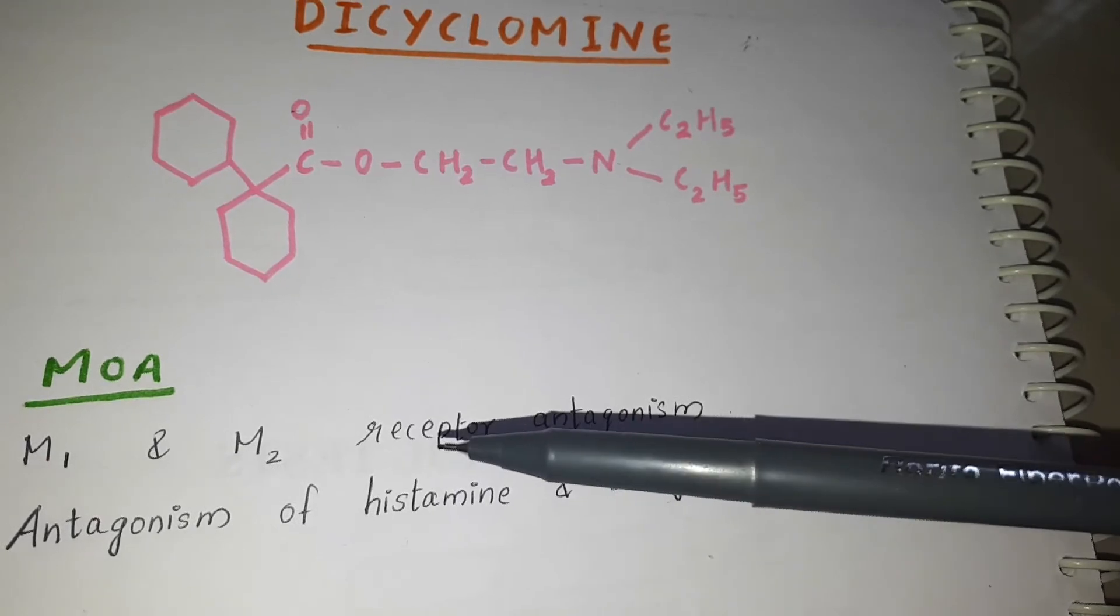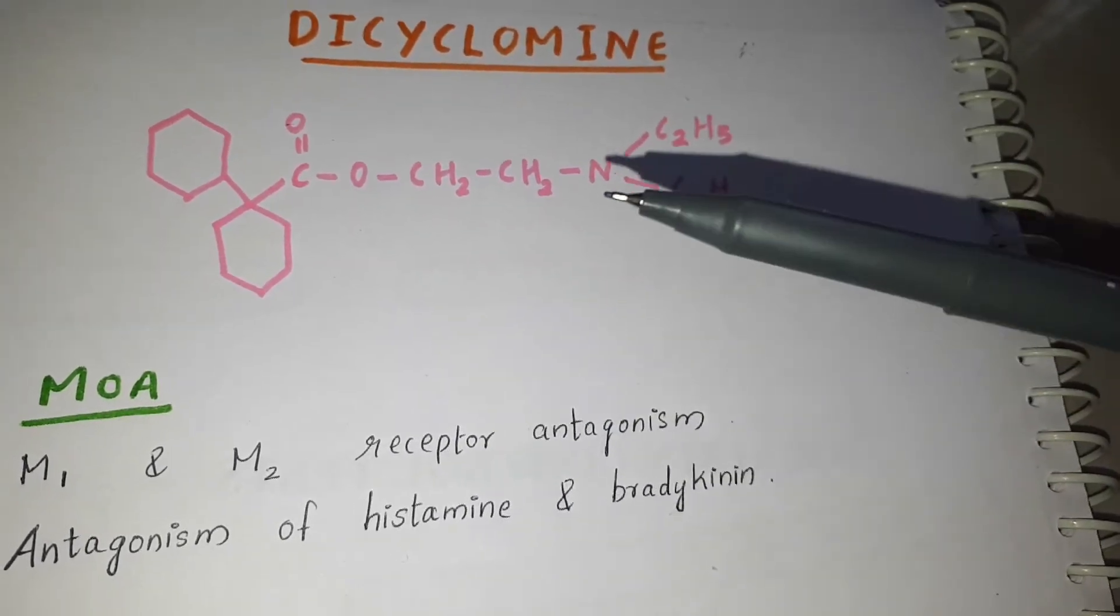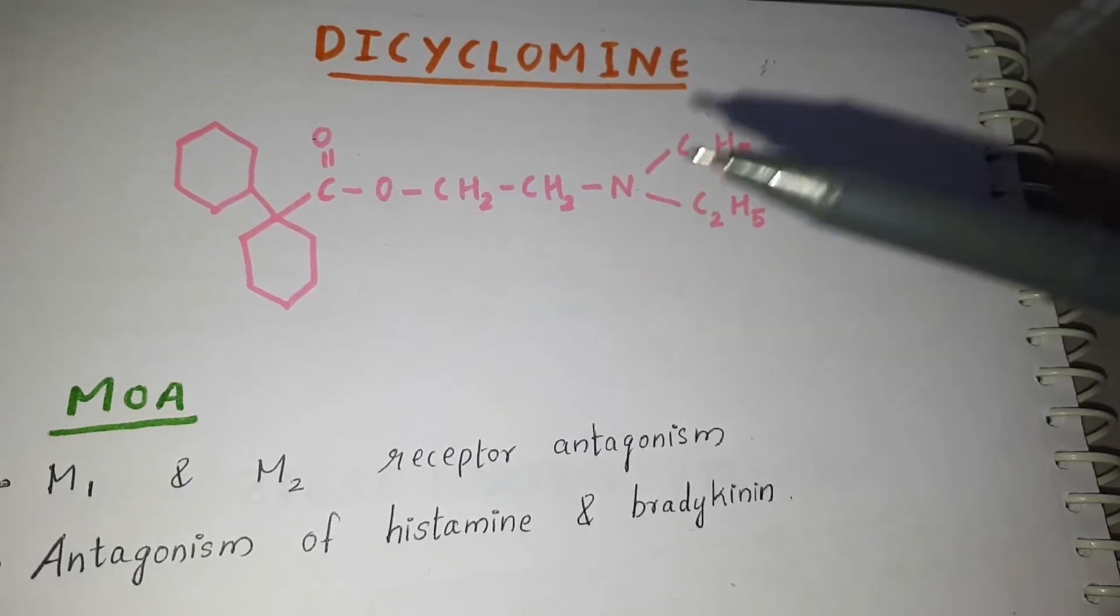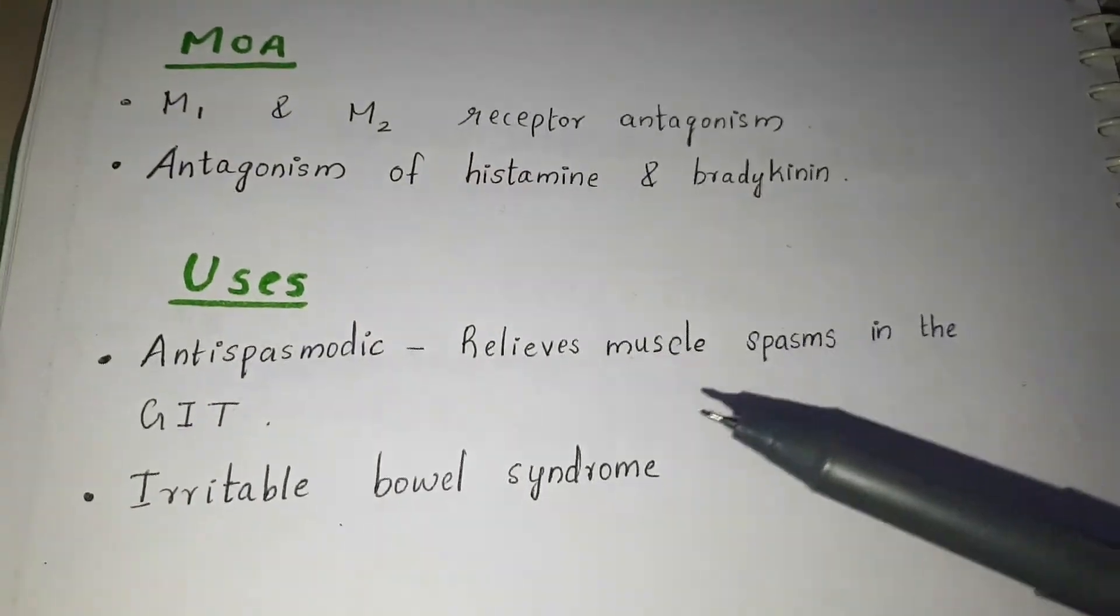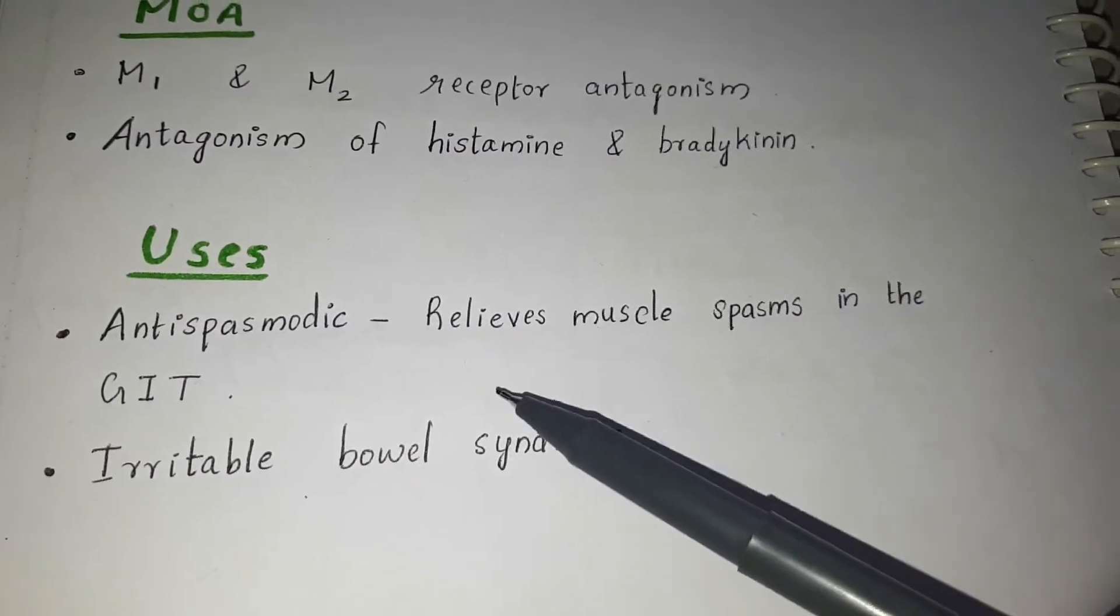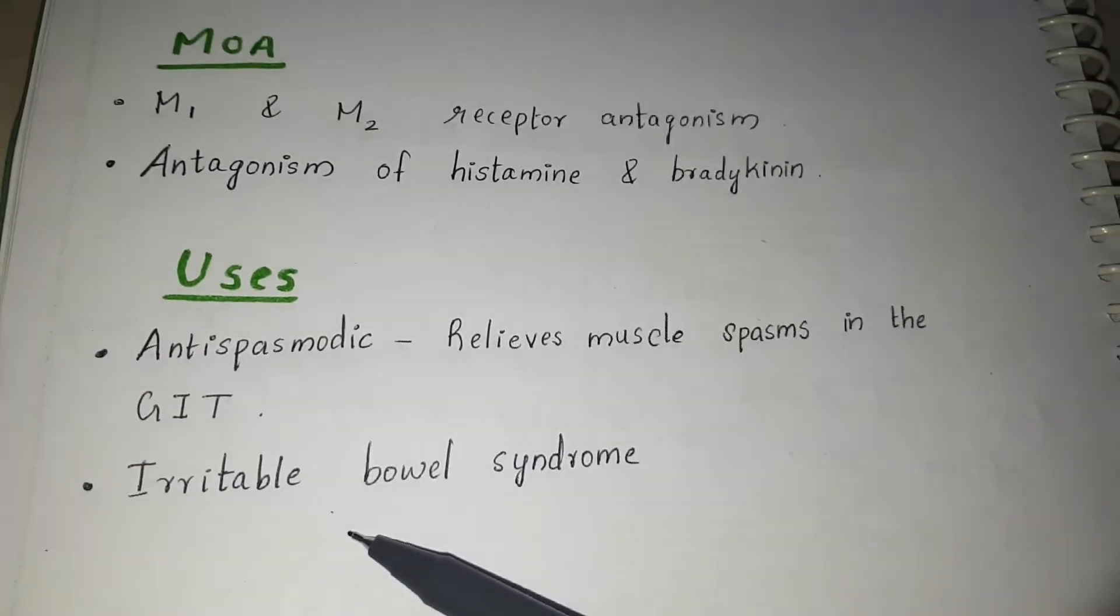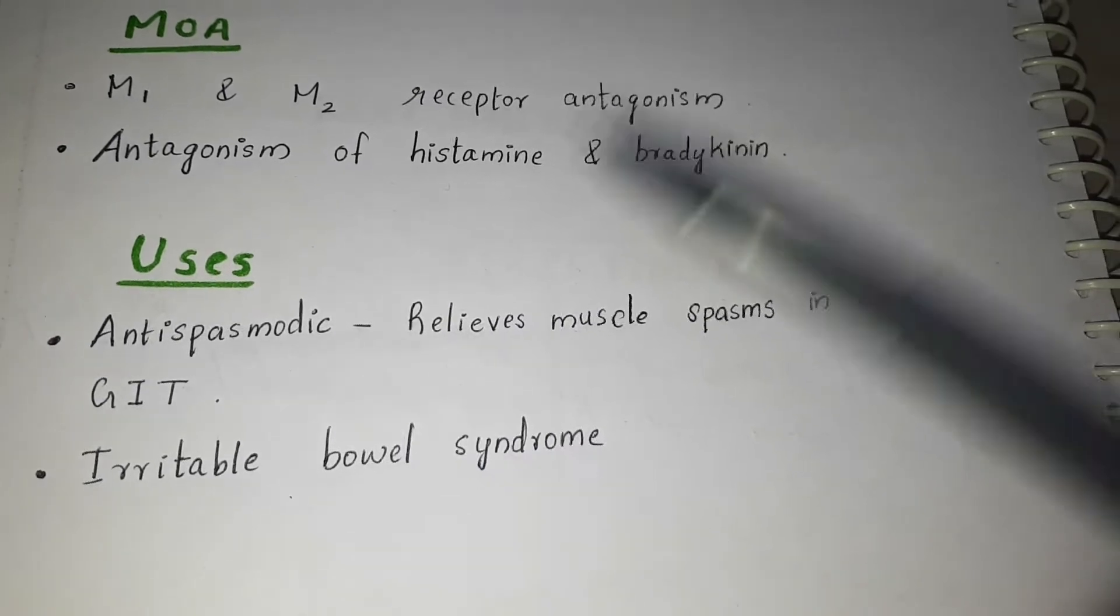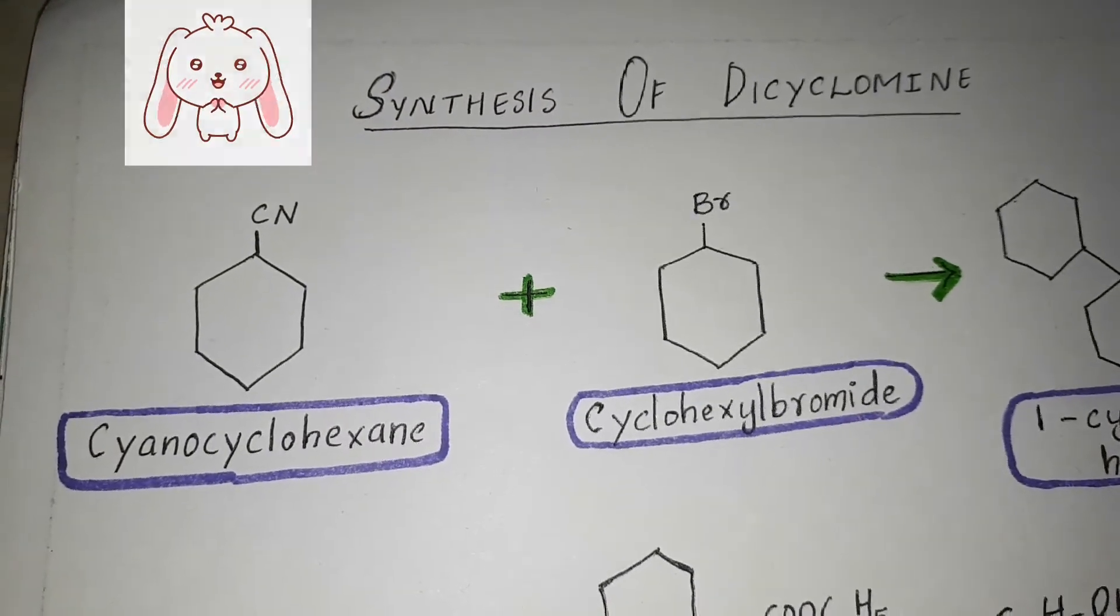Hence dicyclomine acts as a smooth muscle relaxant. The uses of dicyclomine are: it is an antispasmodic, it relieves muscle spasms in the GI tract, and it's used to treat irritable bowel syndrome. Let us look at the synthesis of dicyclomine.